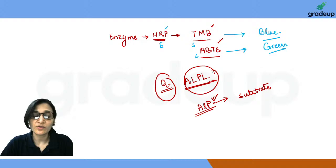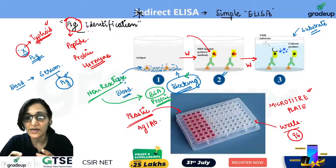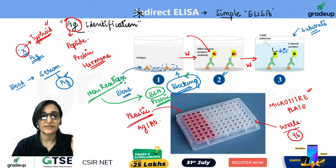TMB is the substrate because there is an enzyme, and the enzyme must have a substrate. Now let's discuss positive and negative results. When substrate is added, the enzyme acts on it. Let's look at positive and negative results in the context of Direct ELISA.